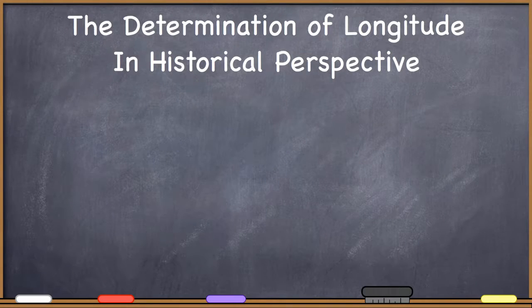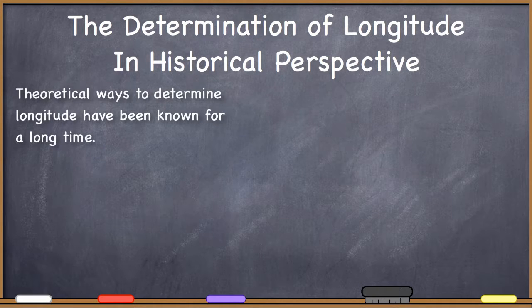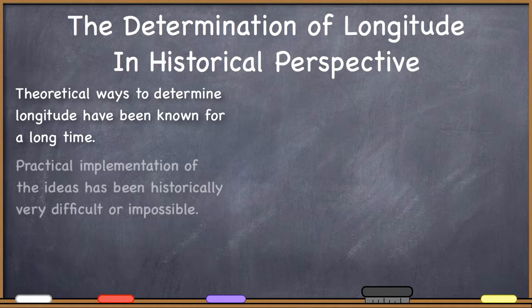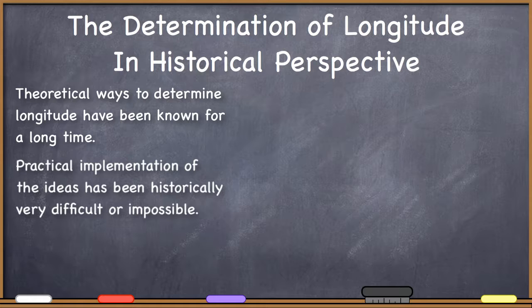The determination of longitude in a historical perspective, although it has been very difficult, there have been theoretical ways to determine longitude for a while, but they have been thought to be very practically impossible, or at least very difficult, and often thought to be dependent upon astronomy.